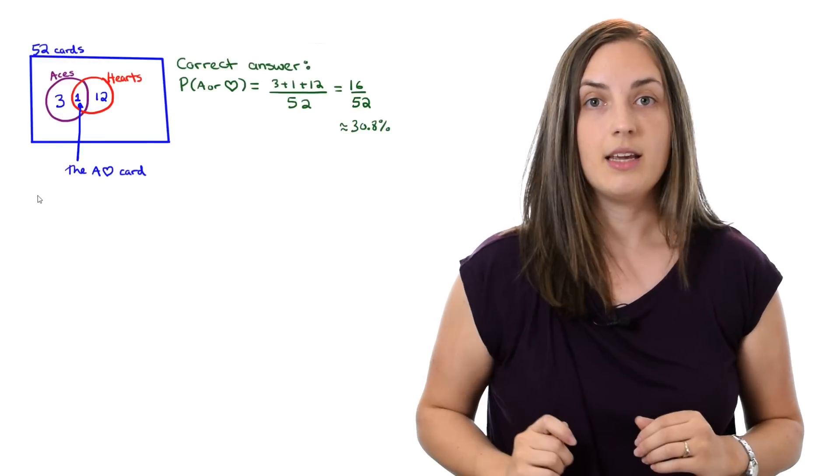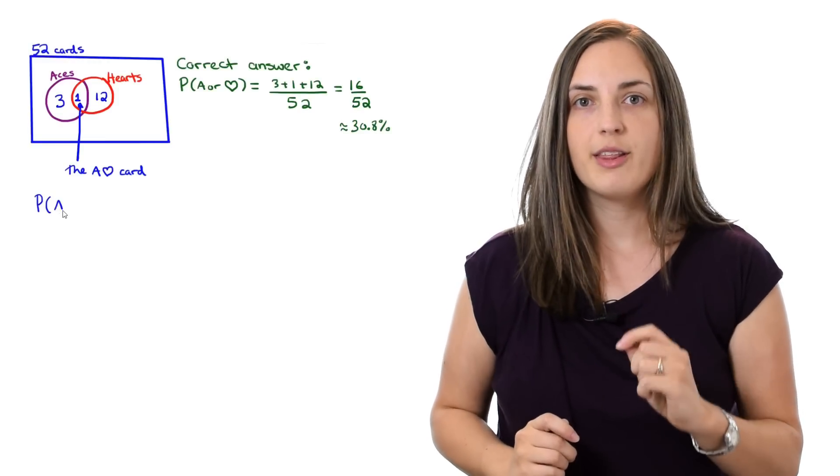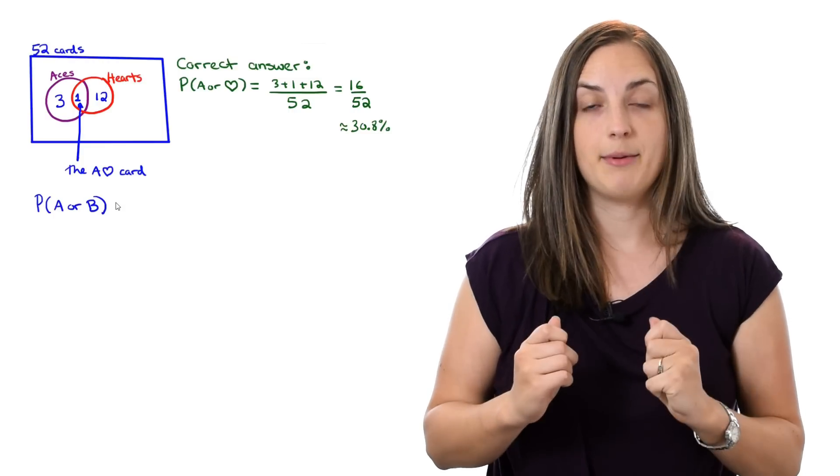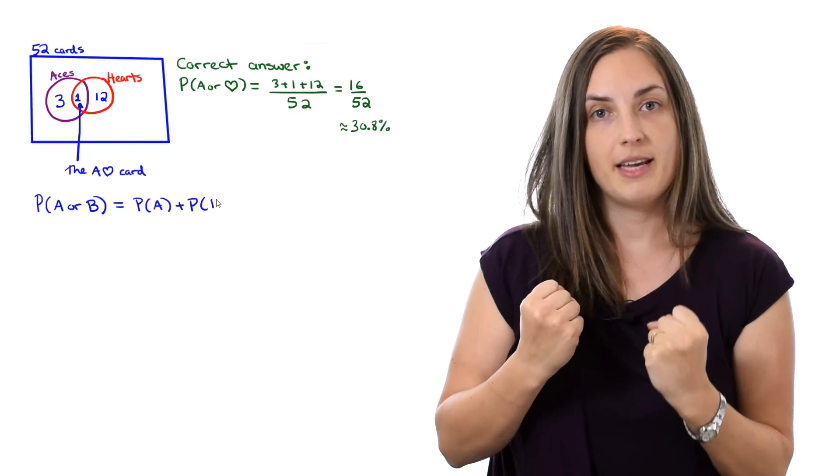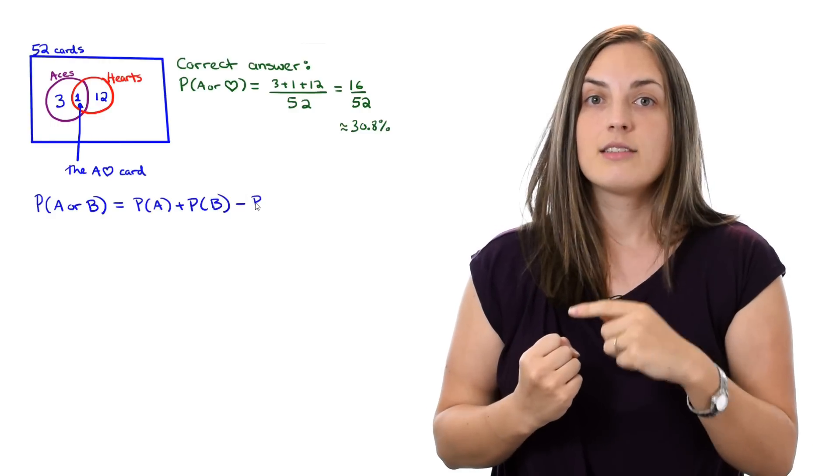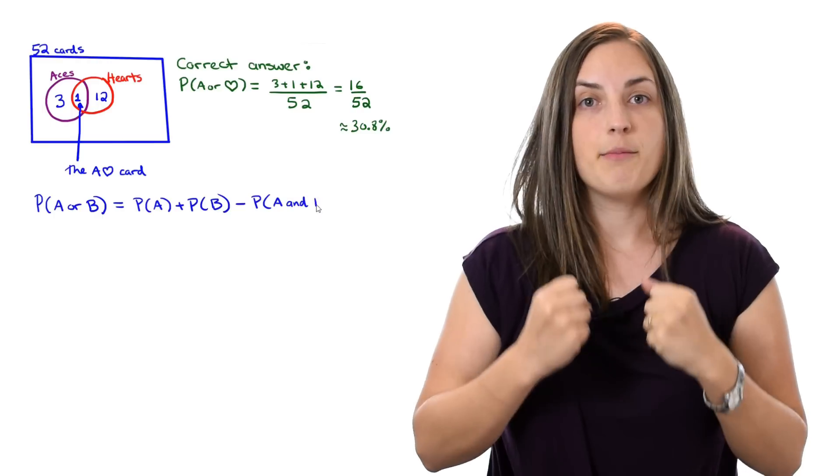In general, if we have two events, let's call them A and B, and we want to know the probability that A or B happens, that's equal to the probability that A happens plus the probability that B happens minus the probability that A and B both happen.